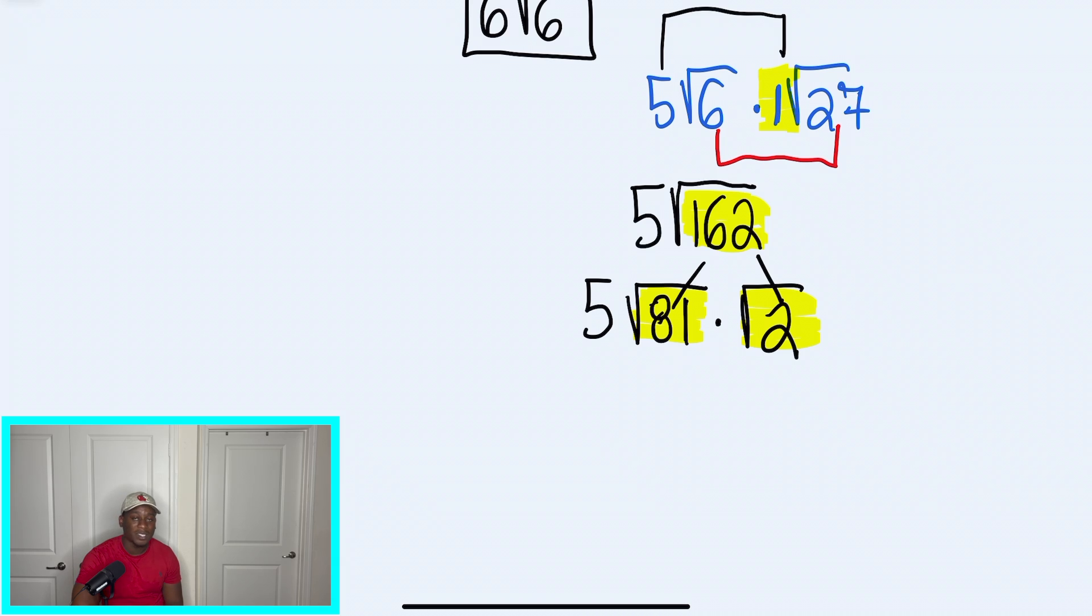So radical 2, we can't break it down anymore. I'm just going to draw an arrow so we know we're going to bring it down. But 81, we could definitely break down. That's a perfect square. So when we break this down, we have 5 times 9, because that's the square root times radical 2. So our final answer in this problem would be 45 radical 2.